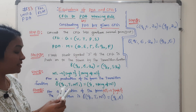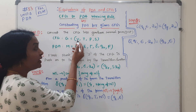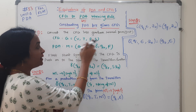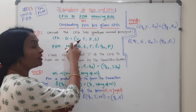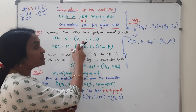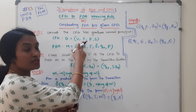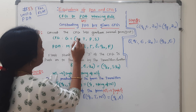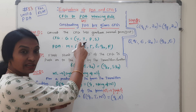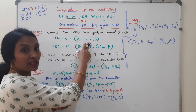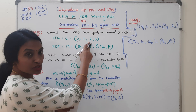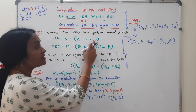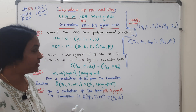What does CFG mean? CFG is V, T, P, S. V is nothing but variables. T is nothing but terminals. P is nothing but the set of production rules. S is the starting symbol. Simple.